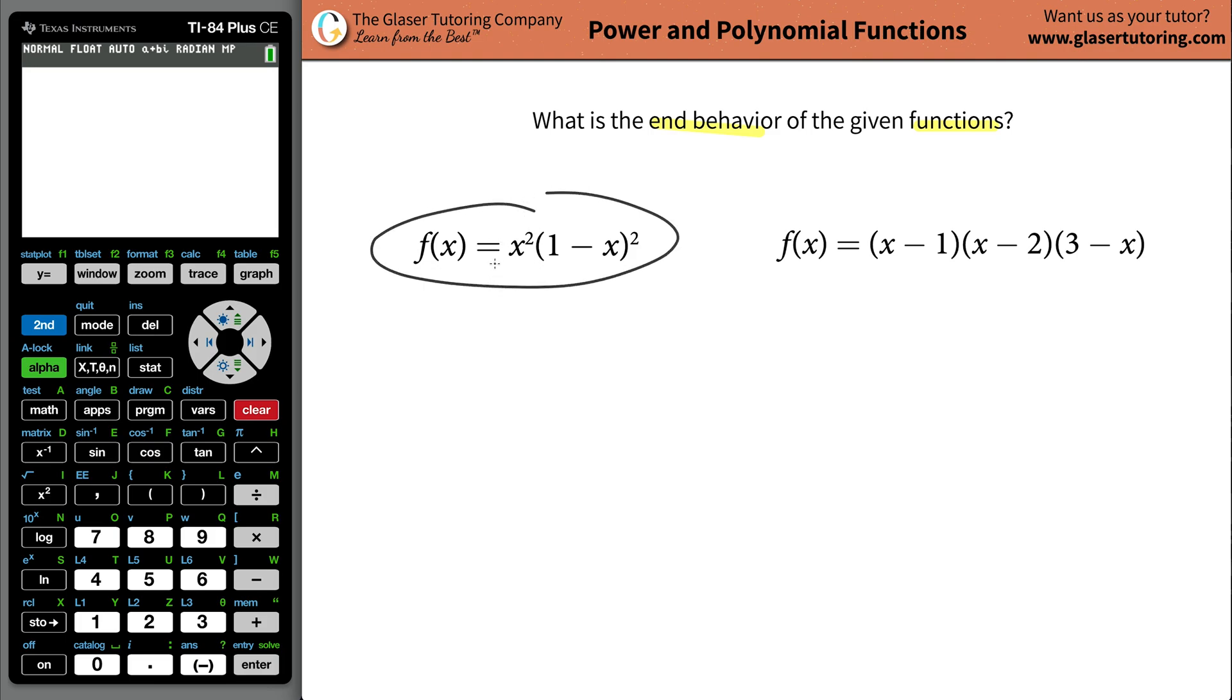First thing I'm going to do is basically take this function and plug it into the calculator. Now you don't have to plug it into the calculator to create a table, but to save a little time, I'm going to do that. And I'll teach you just very quickly how the table works itself out, and you can do it by hand if you like. So just go to y equals and let's plug in this function x squared. So it's x squared, and then we're going to open parentheses and there's going to be one minus x, close the parentheses and then square it.